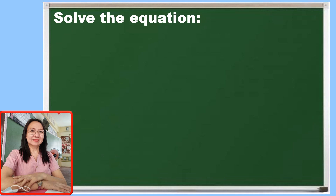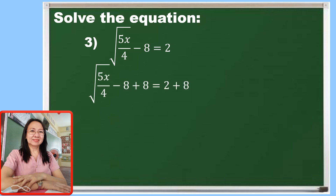Let me give you a more complicated equation. For number 3, our given is the square root of 5x over 4 minus 8 is equal to 2. Observe that constants are separated into left and right side. So by the addition property, by adding both sides by 8, negative 8 will be eliminated. We will arrive at the square root of 5x over 4 is equal to 10.